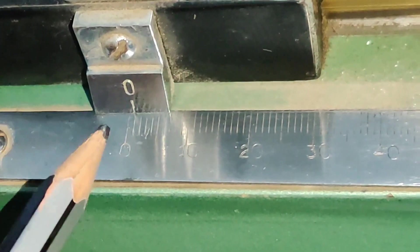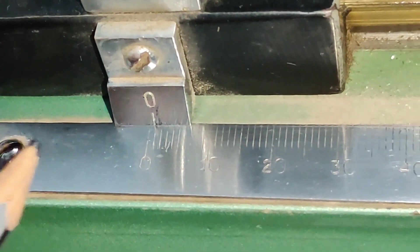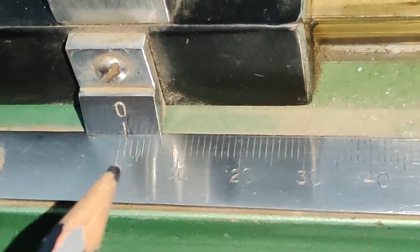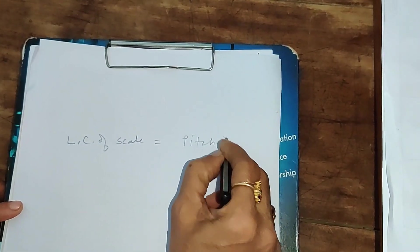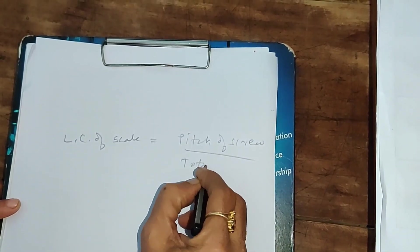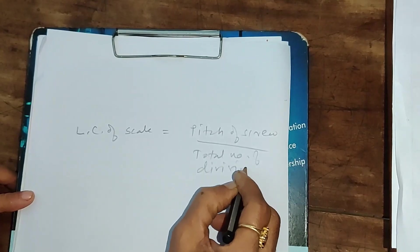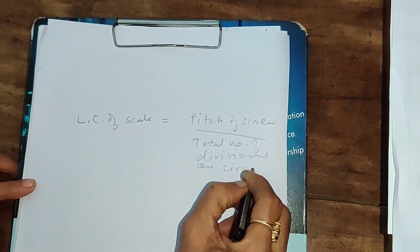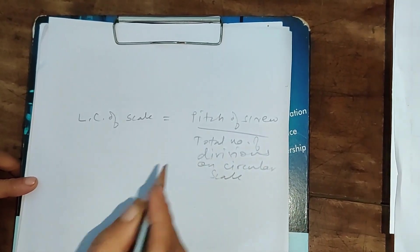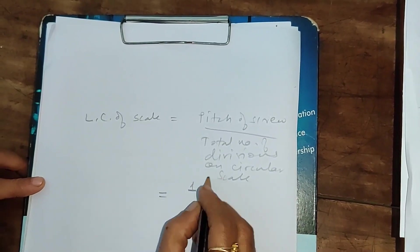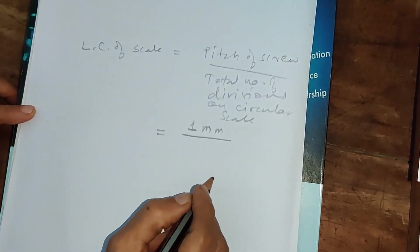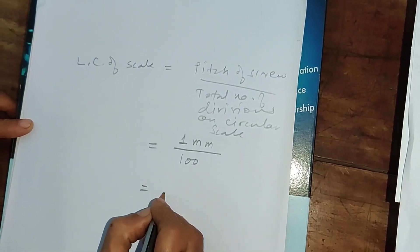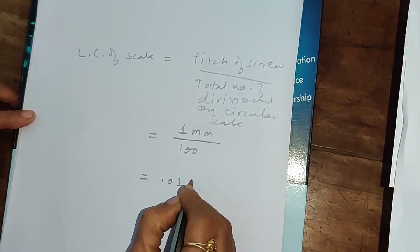That means the distance travelled by this microscope in one rotation is equal to one division on the main scale. This is the pitch of the screw of this microscopic scale. The least count of this scale will be equal to the pitch of the screw divided by the total number of divisions on the circular scale. The pitch, that is the distance travelled in one rotation, is equal to 1 millimeter, and the total number of divisions on the circular scale is 100. Therefore, the least count will be equal to 0.01 millimeter.